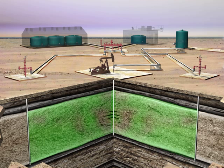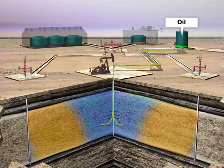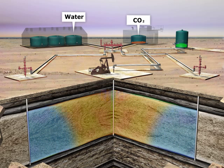The production stream consisting of oil, water, and carbon dioxide is gathered by flow lines and then processed through separation equipment. The recovered oil is stored for transport to sale, while the water and carbon dioxide are then returned in separate streams to the injection system so the cycle can repeat.